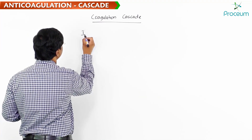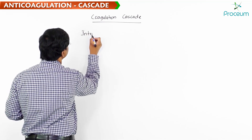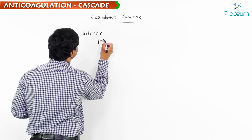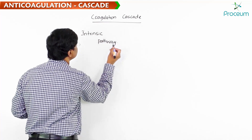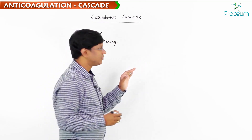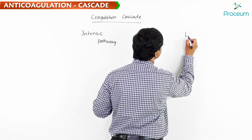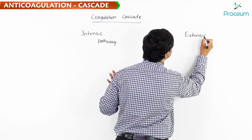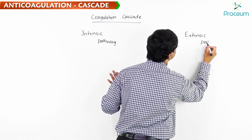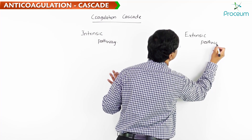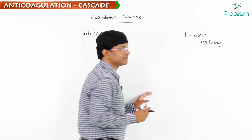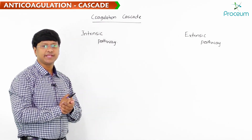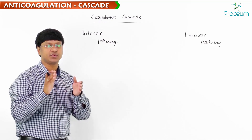Within the coagulation pathway, we have what is called the intrinsic pathway, and we also have what is called the extrinsic pathway.